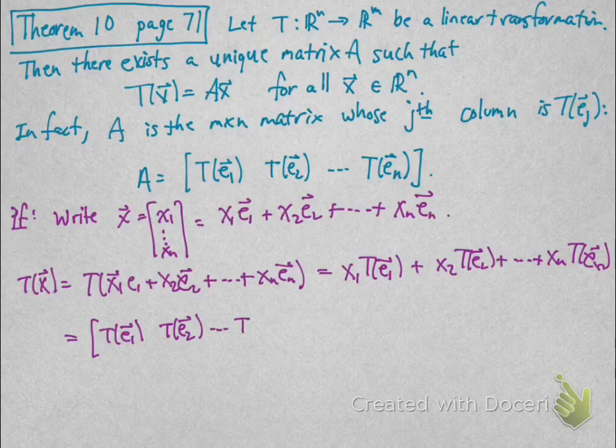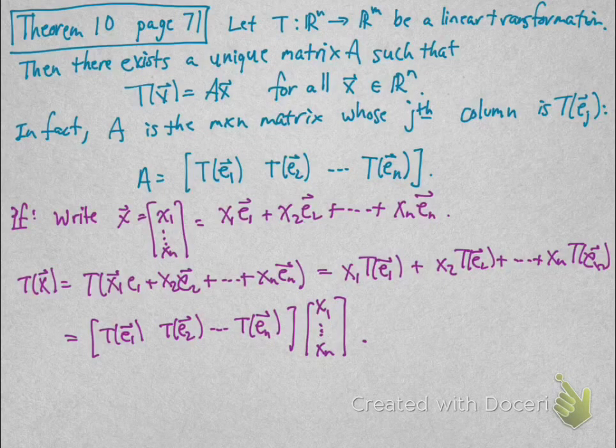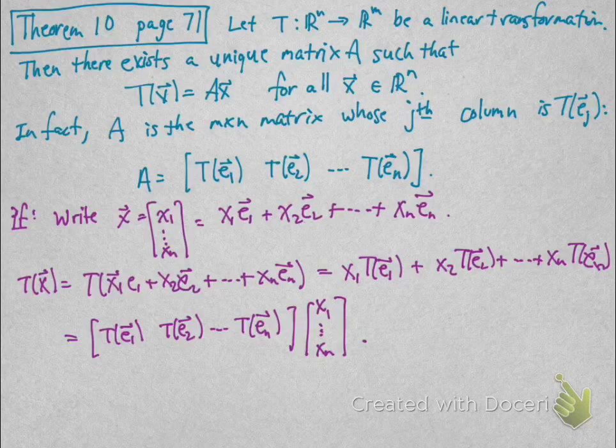By the matrix-vector product definition, that's just the matrix with columns T(E_1) up to T(E_n) times the vector x, which is A times x.